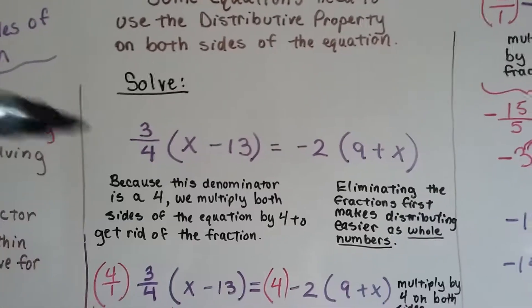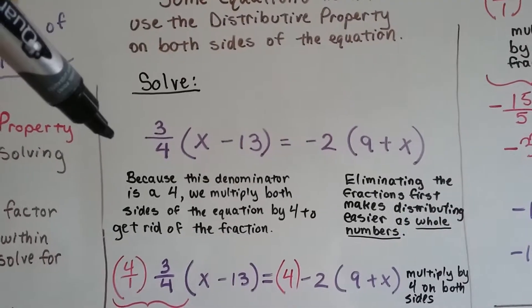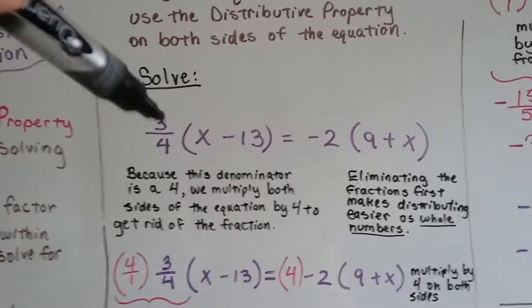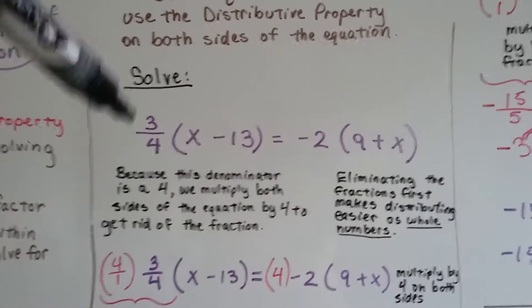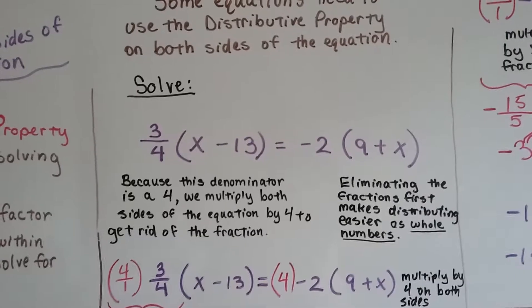Because this 3/4 has got a denominator of 4, we're going to multiply both sides of the equation by 4 to get rid of that fraction. By eliminating the fractions first, it makes it easier to distribute as whole numbers.